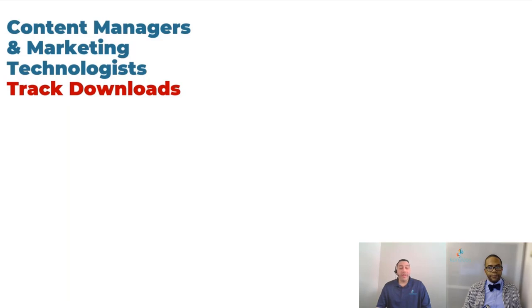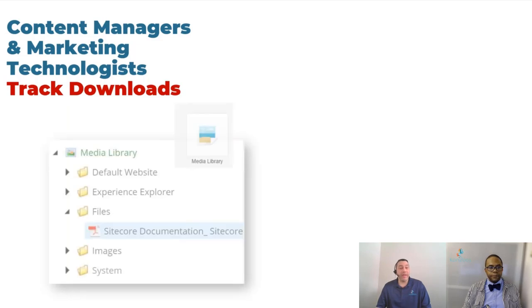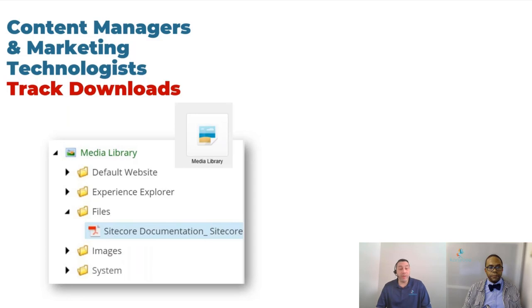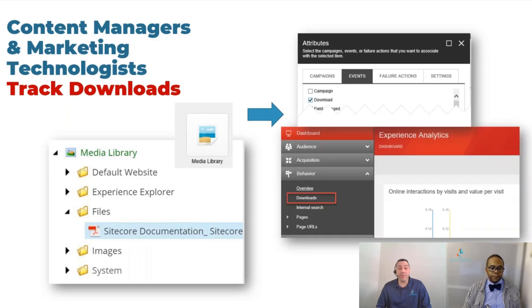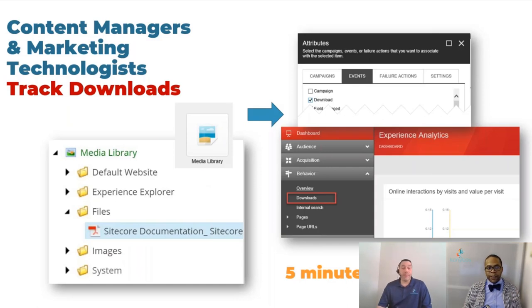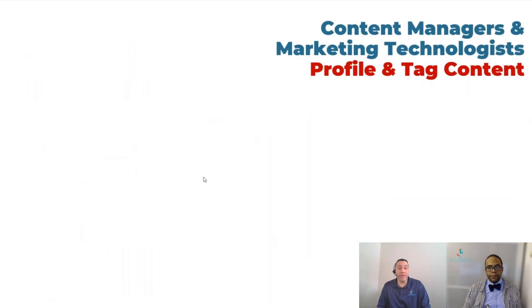Tracking downloads: a few years ago I wrote a blog post on this. You can upload a media item — anything you want people to download — click on the Analyze button, click on Attributes on the Events tab, click on Download, and within five minutes you can actually be tracking your downloads. It's very quick, something you can do as a content manager right away. No need to wait for phase two — just do that as you're uploading your media items.